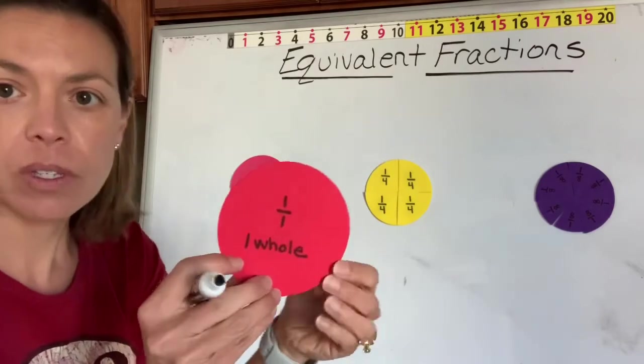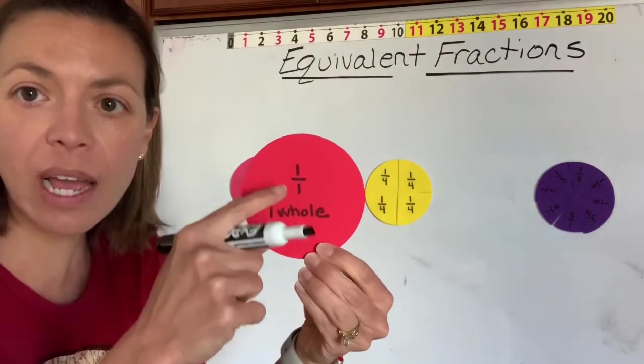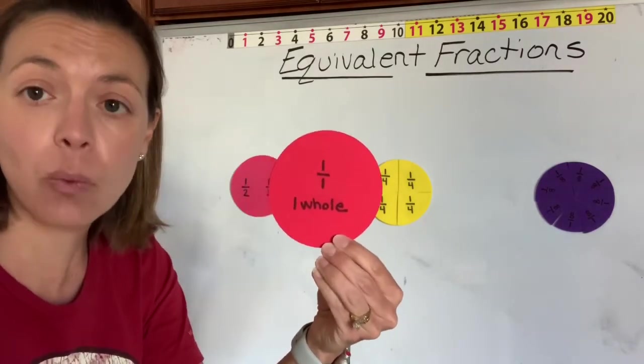So if we look here, we have one whole. One out of one piece. One whole.